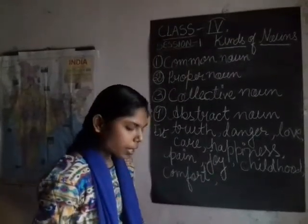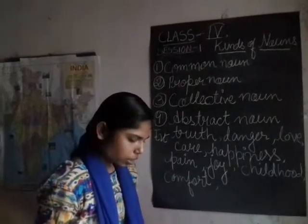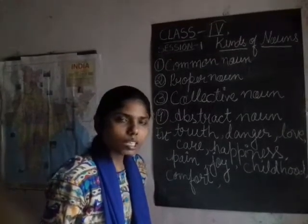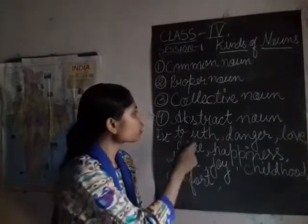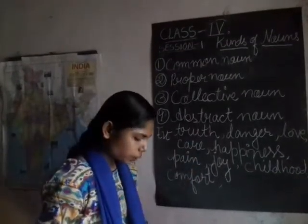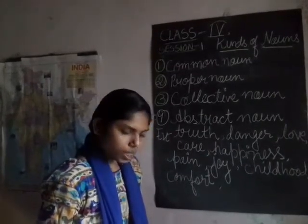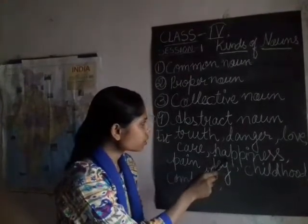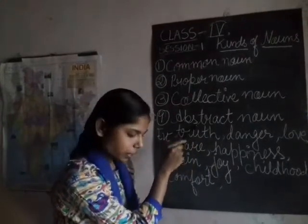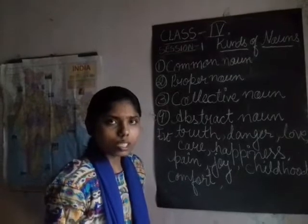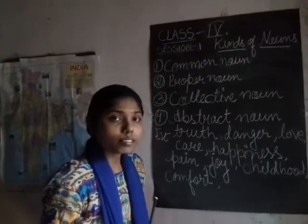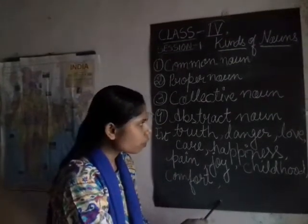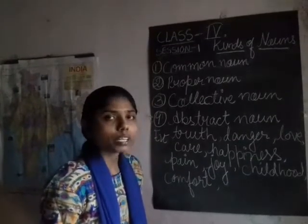Rama felt a lot of anger after losing the game. We cannot see her anger but we can feel she is angry — so anger is an abstract noun. Happiness is the most important thing in life — we cannot see happiness but we can feel it, so happiness is an abstract noun. Honesty is the best policy — honesty we cannot see but we can feel, so honesty is an abstract noun.